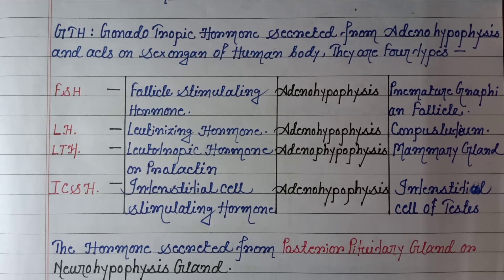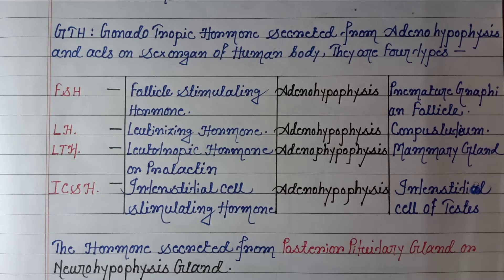First is FSH hormone, that is follicle stimulating hormone. It is secreted from the adenohypophysis and acts on the premature Graafian follicle. Next is LH, that is luteinizing hormone. The source is the adenohypophysis and it acts on the corpus luteum.